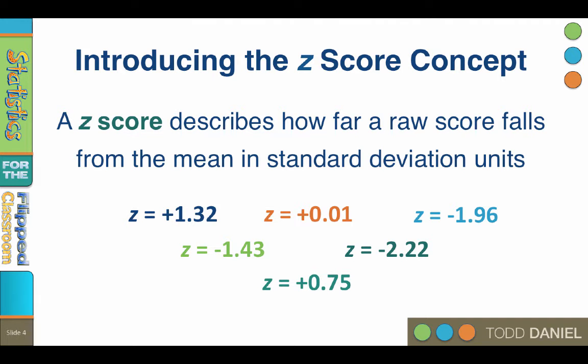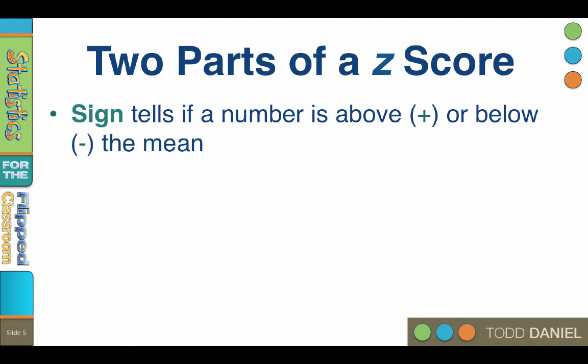There are two parts to a z-score, the number and the sign. The sign tells you whether the z-score is above positive or below negative the mean. Now there are very few always and nevers in statistics, but this is one. The positive z-score is always above the mean. The negative z-score is always below the mean. Now in the real world, sometimes the positive is assumed, so the sign is omitted. However, as we learn, I'd like you to include the positive or negative sign just for consistency.